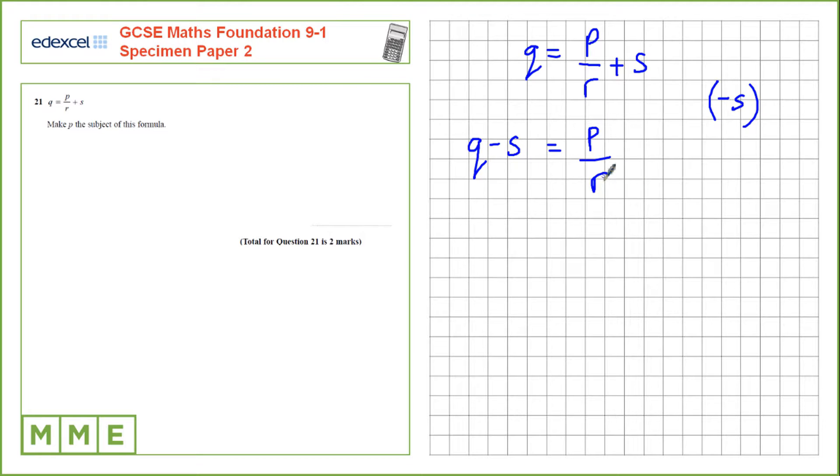Next we want P on its own. At the moment we're dividing by R, so we need to multiply by R to cancel it out on that side. On the left hand side we need to multiply everything here by R, so that's R multiplied by Q minus S in a bracket. On the right hand side, multiplication by R cancels out, which just leaves us with P.